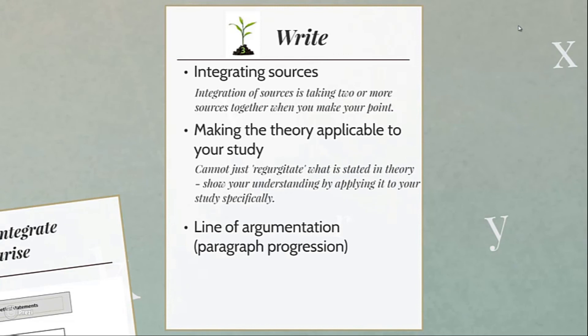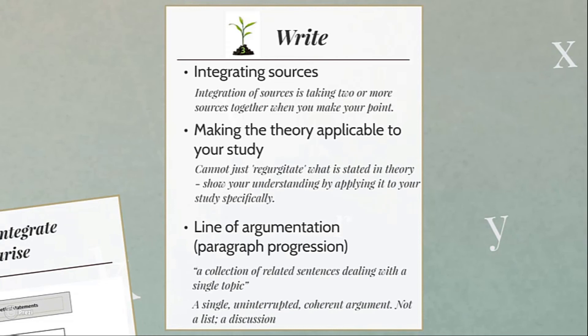Lastly, let's look at line of argumentation and paragraph progression. A paragraph is a collection of related sentences dealing with a single topic. Through your paragraphs, you progress a single, uninterrupted, coherent argument — an academic argument pushed forward paragraph by paragraph. You should never have a list of facts in your literature review; you should have a coherent discussion. Let's stand still on adequate development, unity, and coherence.